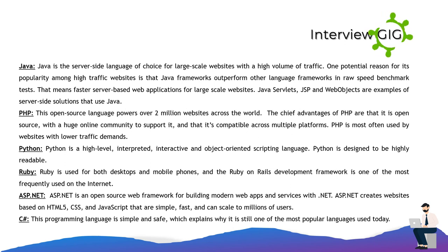Python is a high-level, interpreted, interactive, and object-oriented scripting language designed to be highly readable. Ruby is used for both desktops and mobile phones, and the Ruby on Rails framework is one of the most frequently used on the internet. ASP.NET is an open-source web framework for building modern web apps and services; it creates websites based on HTML5, CSS, and JavaScript that are simple, fast, and can scale to millions of users. C# is a simple and safe programming language and remains one of the most popular languages used today.